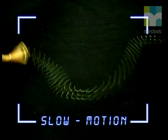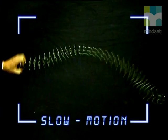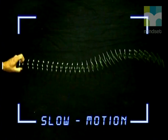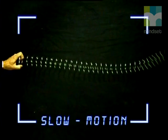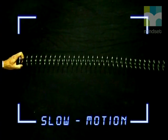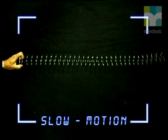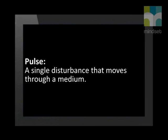The coils move up away from their original position, then down past the original position, then back to the original position. How do these observations help us to define a pulse? We can now say that a pulse is a single disturbance that moves through a medium. I'm sure you will agree that it's quite a logical definition.